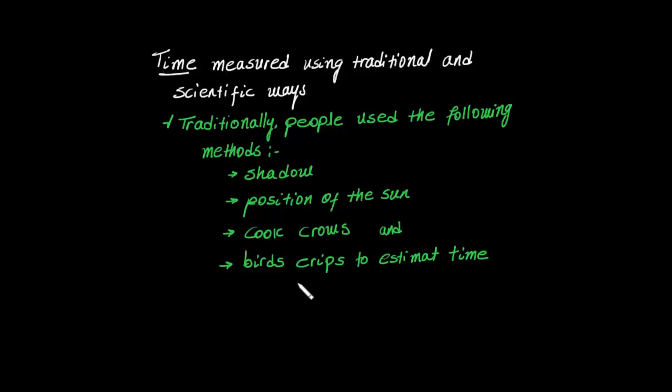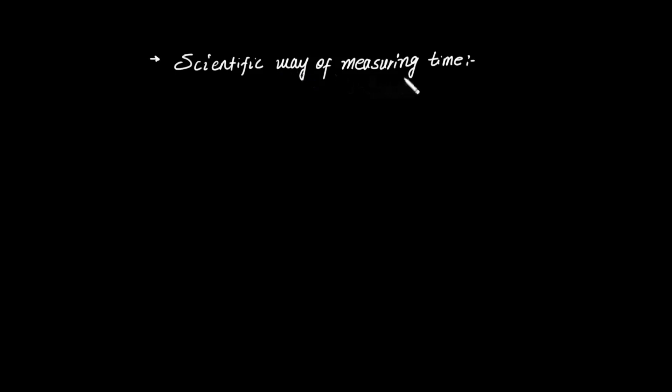We can approximate time, and there is the scientific way of measuring time — this is the modern way of measuring time, which allows us to measure exactly.